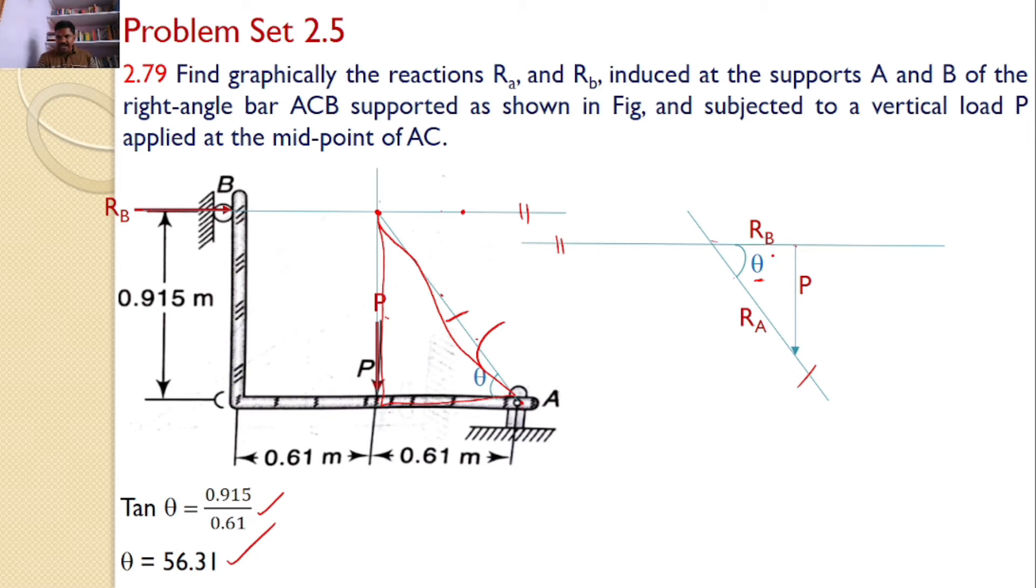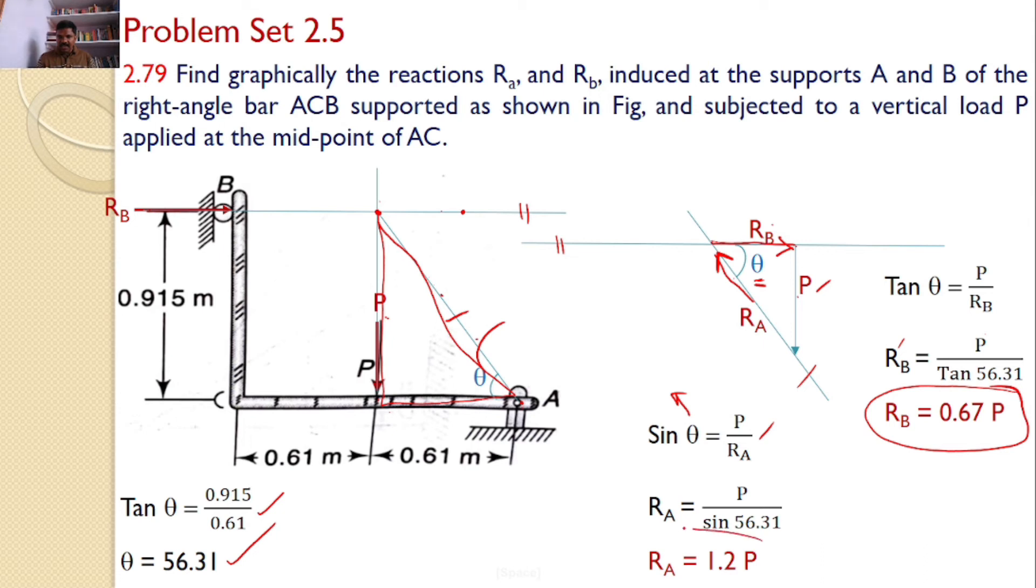This side is Rb and this side is Ra. By using this right angle triangle and knowing the value of theta, I can say tan theta equals P by Rb, where theta equals 56.31. So Rb equals P divided by tan 56.31, or Rb equals 0.67P. Similarly, sin theta equals P by Ra. Hence, Ra equals 1.2P. These two are the answers.